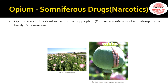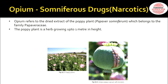Opium is derived from the dried extract of the poppy plant, which belongs to the family Papaveraceae. In picture 13.1 you can see the poppy plant, and in picture 13.2 you can see the capsule of the poppy plant — this is the portion from where opium is extracted. When an incision is made, a milky fluid substance comes out.